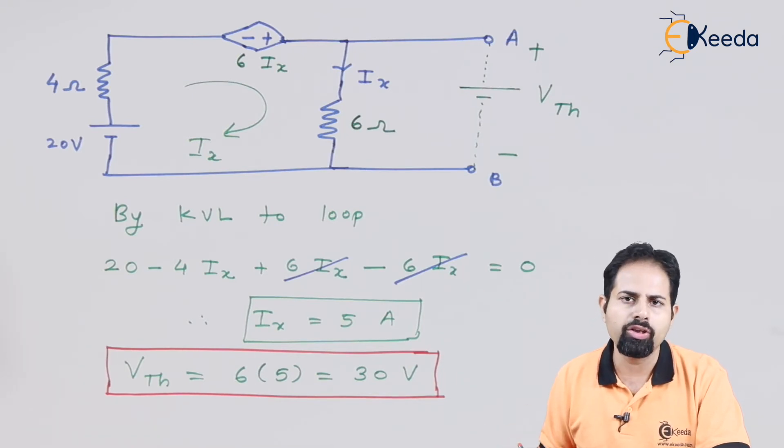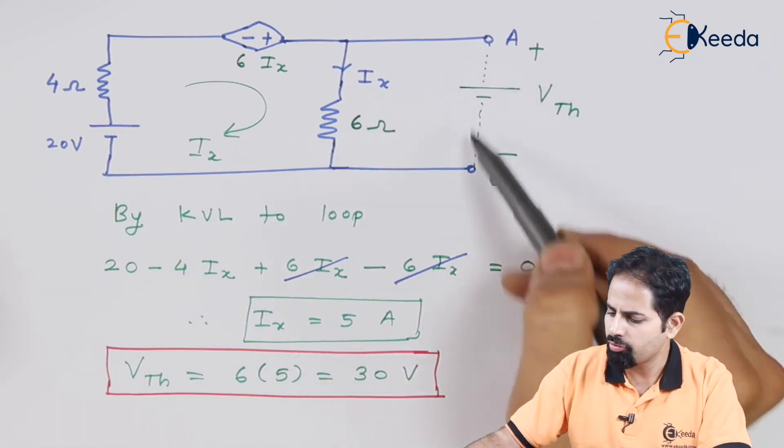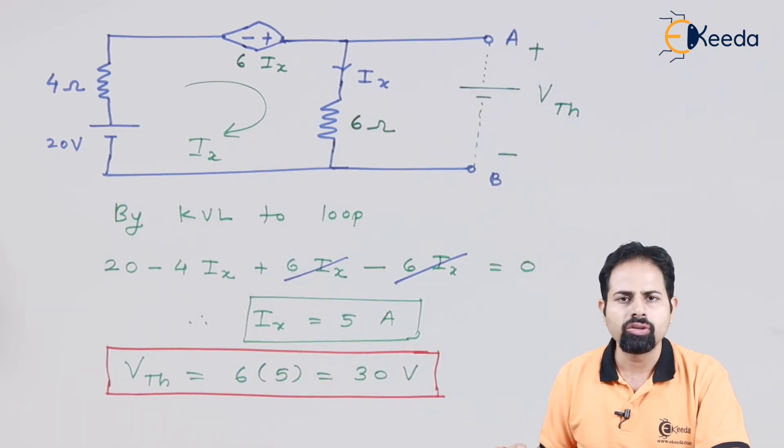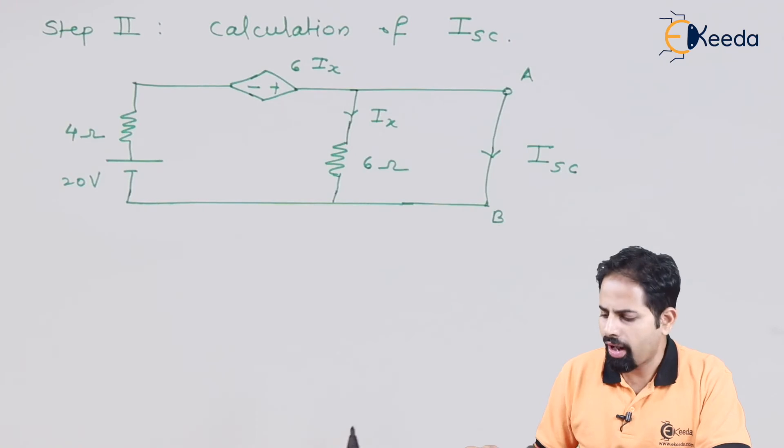So we are done with our step 1 which is Vth that is equal to 30 volts. Now step number 2 is calculation of Isc for which we will have to short this branch. So let us do it.